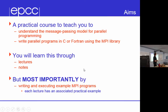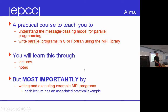So the aim is, it's a practical course to teach you to understand the message passing model for parallel programming — that's really important. What does programming a parallel computer using message passing mean? And then write real programs using C or Fortran and using MPI. We'll do this through a bunch of lectures and notes, all of which are on the web. But most importantly, by writing your own MPI programs.